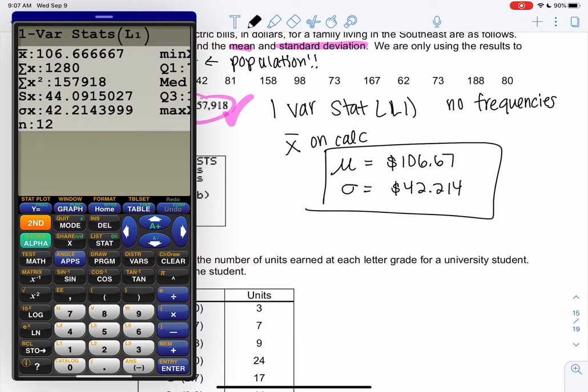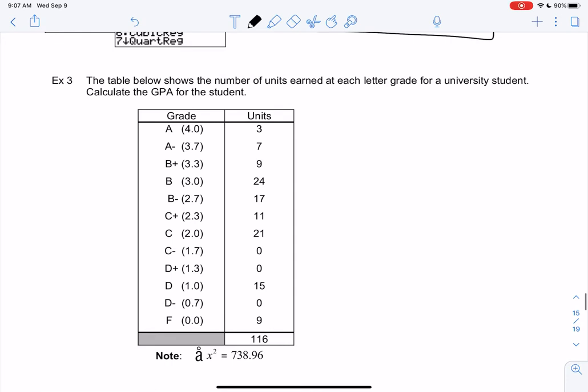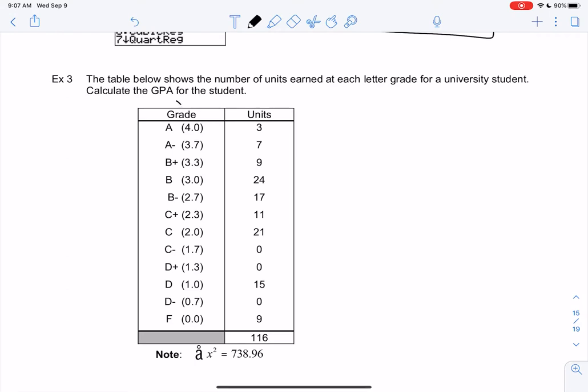All right, let's just do one final example on the calculator, and that's it for 3-4. So GPA is something you're all used to for being an average, right? Grade point average. And it's a good example of frequency, so your grade is basically like the data value. 4.0 is a data value, and then units is how many times, right? So that would be frequency. So we're going to go back to having an L1 and an L2.